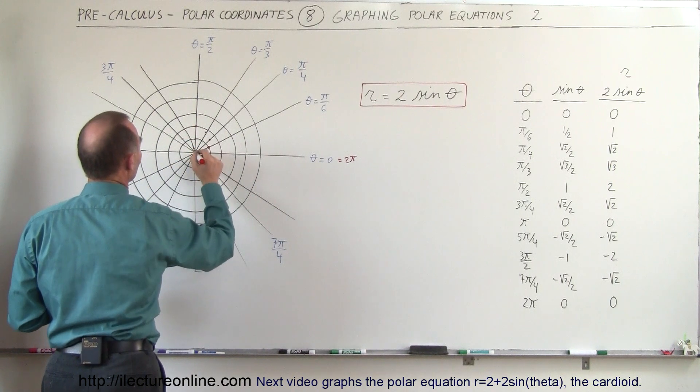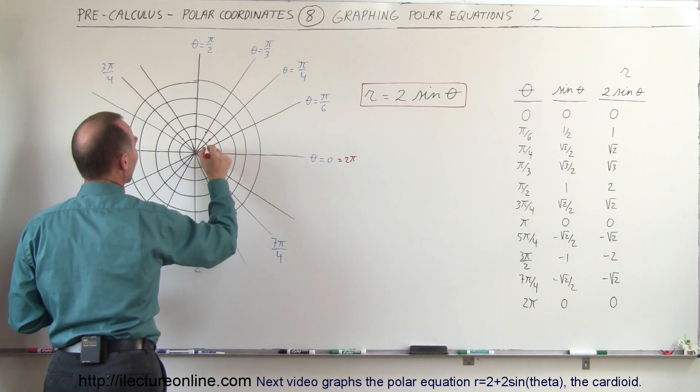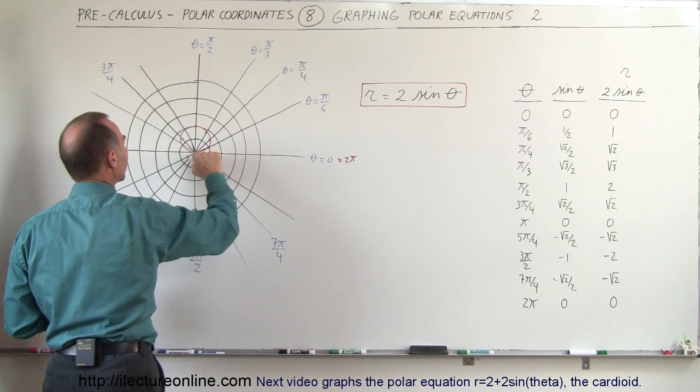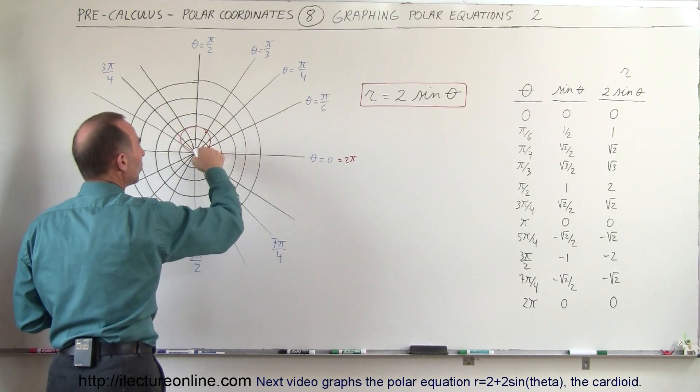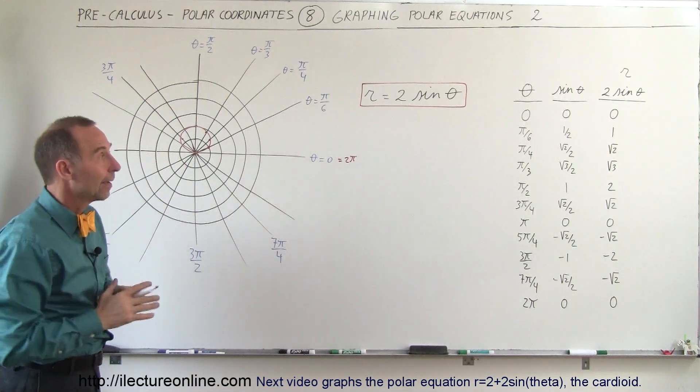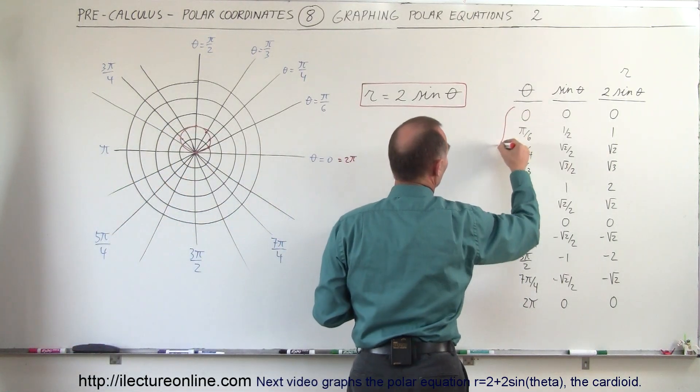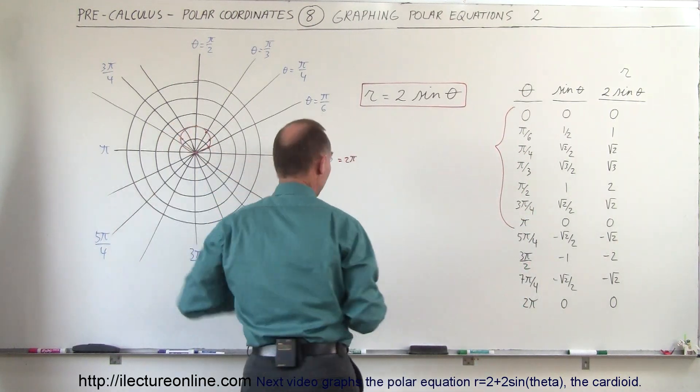Then we continue on to π, we get 0. So when we go all the way down to π, we get back to 0. When we connect these dots, it looks like we have a little circle that has a radius of 1, goes from r equals 0 to r equals 2. That would be the first set of numbers from 0 all the way to π, giving us this first circle.